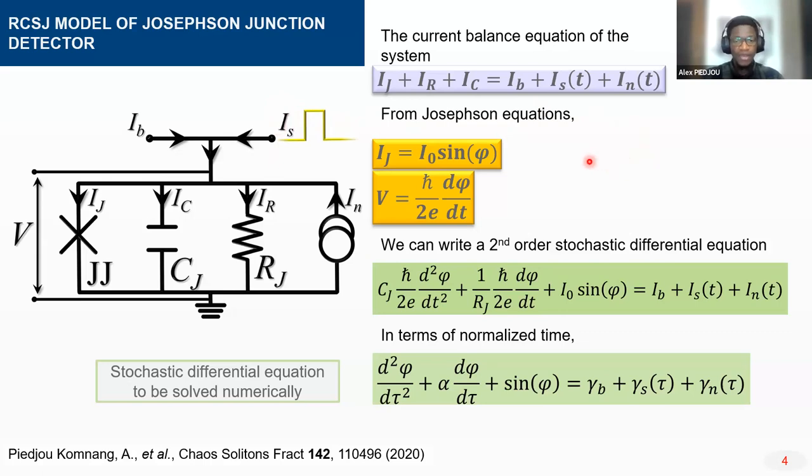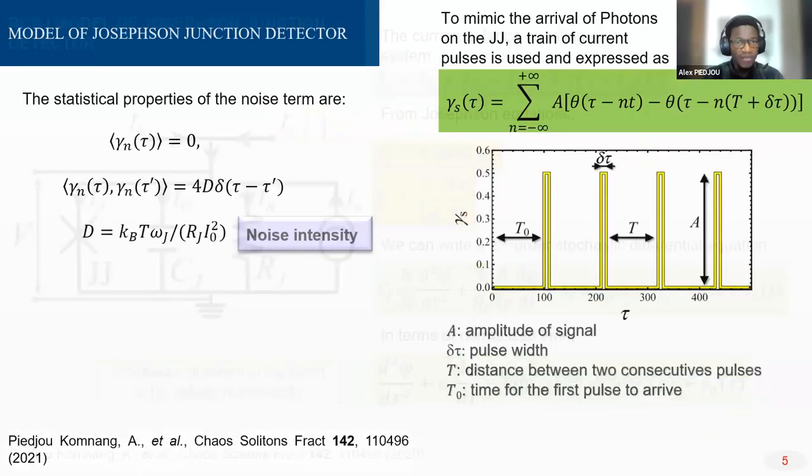By using Kirchhoff's law from the equation of Josephson, we write the normalized equation that we're going to use to do our analysis. We also note the noise term here, since noise is one of the crucial problems in quantum technology. The statistical properties of the noise are given as follows. To mimic the arrival of a photon, we use this train of current pulses, where A is the amplitude of signal, tau is the distance between two consecutive pulses, and this time T is chosen large enough so that two wave packets will not interfere together, and T_0 is the time at which the first pulse arrives, randomly distributed between zero and T.